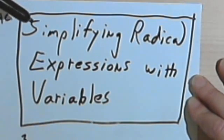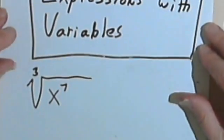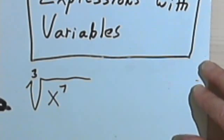This video is going to be about simplifying radical expressions that contain variables. So let's say I'm given the expression the cube root of x to the 7th and I'm told to simplify it.